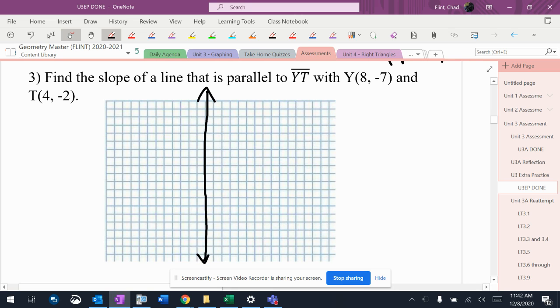So you want to find the slope of a parallel line, but in order to do that, we've got to find the slope of the actual line that's there to begin with first.